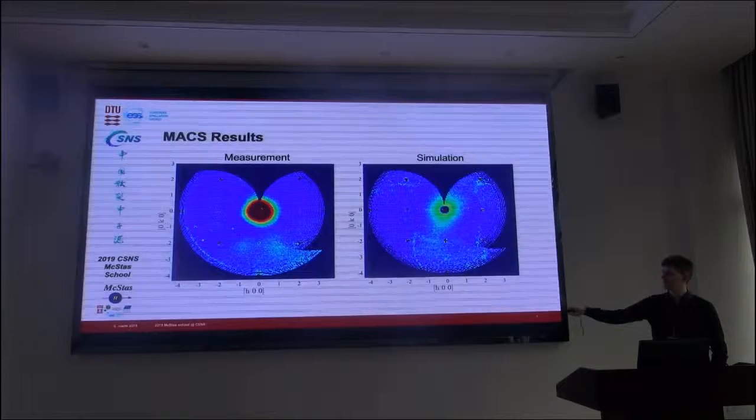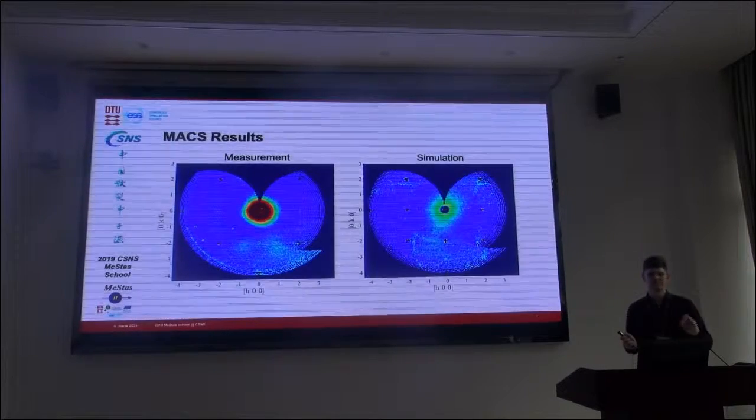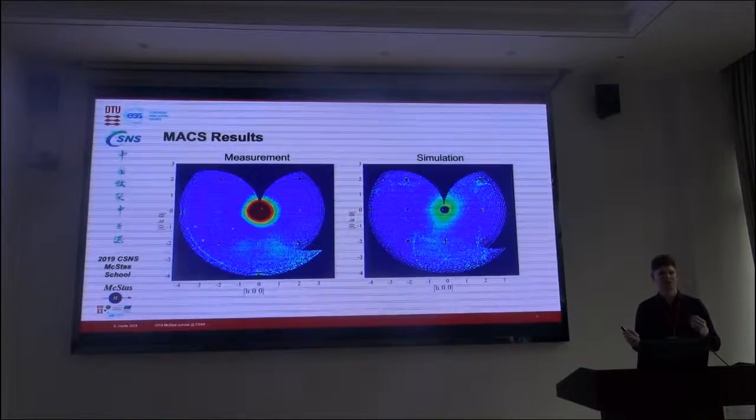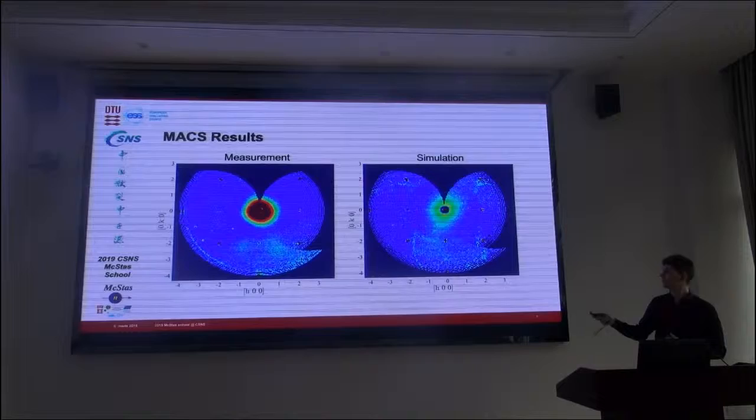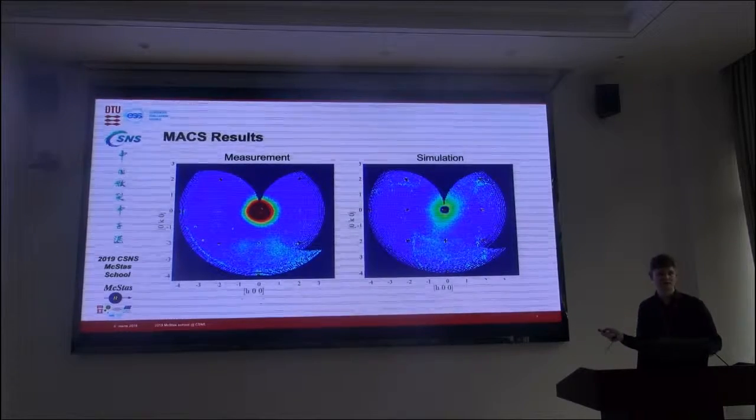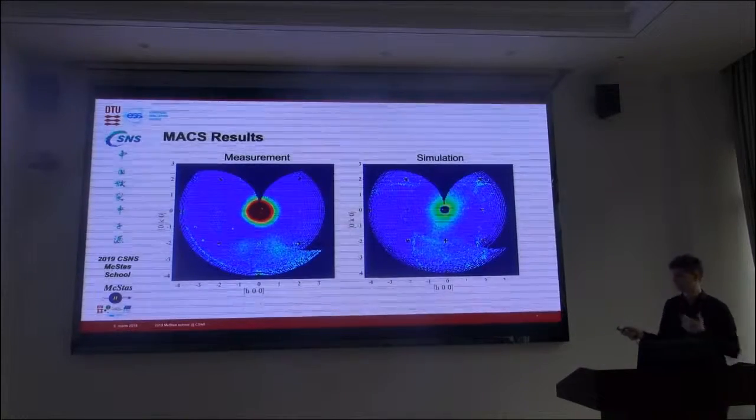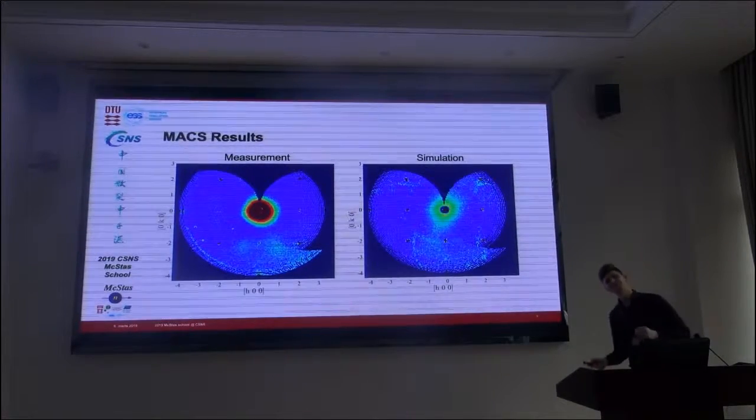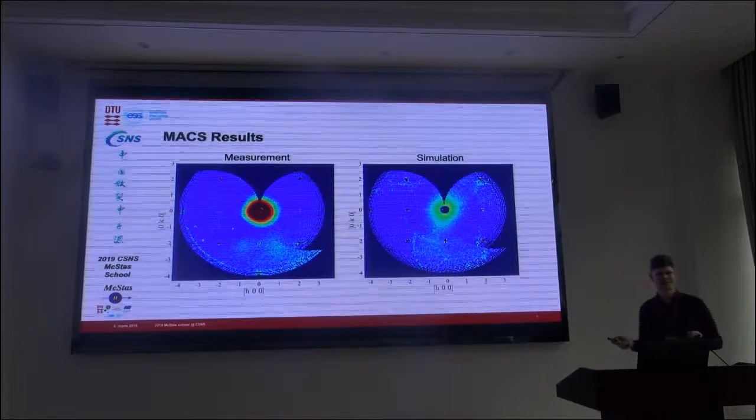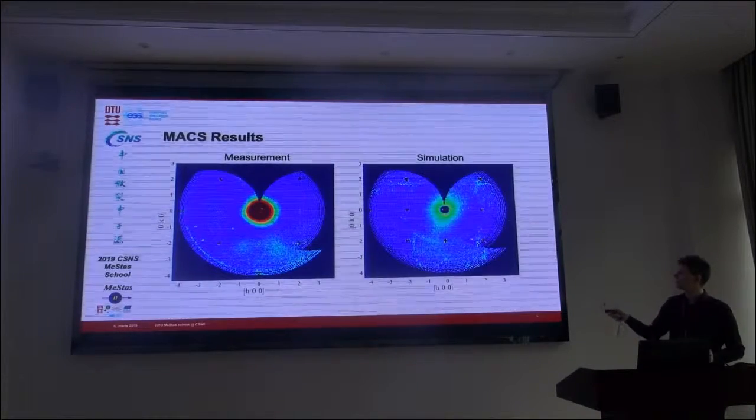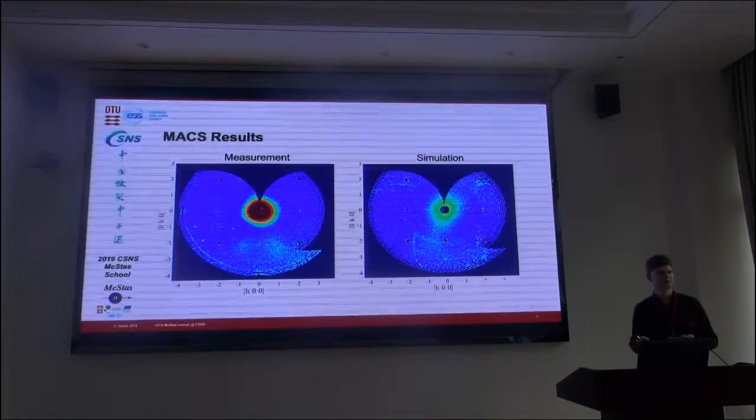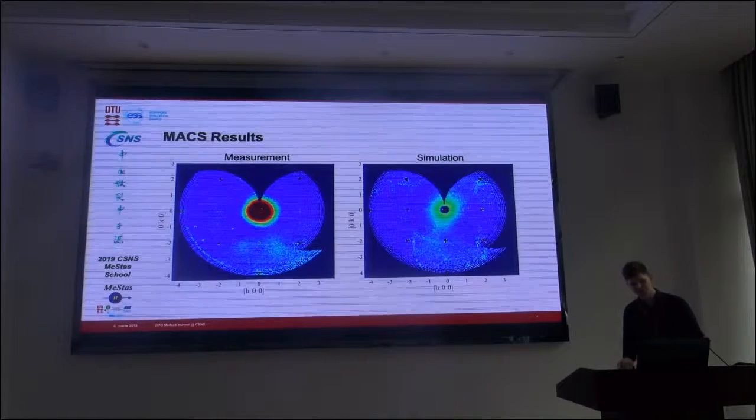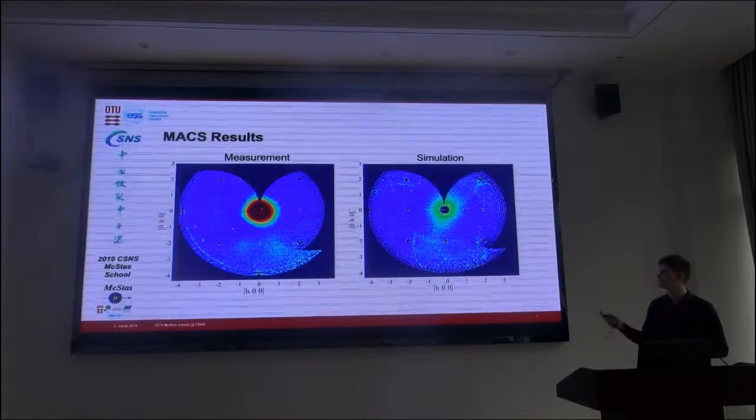These three peaks are probably the Bragg peaks from a small crystallite that is not oriented the same way as the main crystal. So of course that is not in the simulation because we didn't know about it. Then there is this large background in the center. This was sadly what I was paid to find, but the simulation simply doesn't have it. So it must be something that is not in the simulation. This was still helpful information, but we had really hoped to be able to track that down.